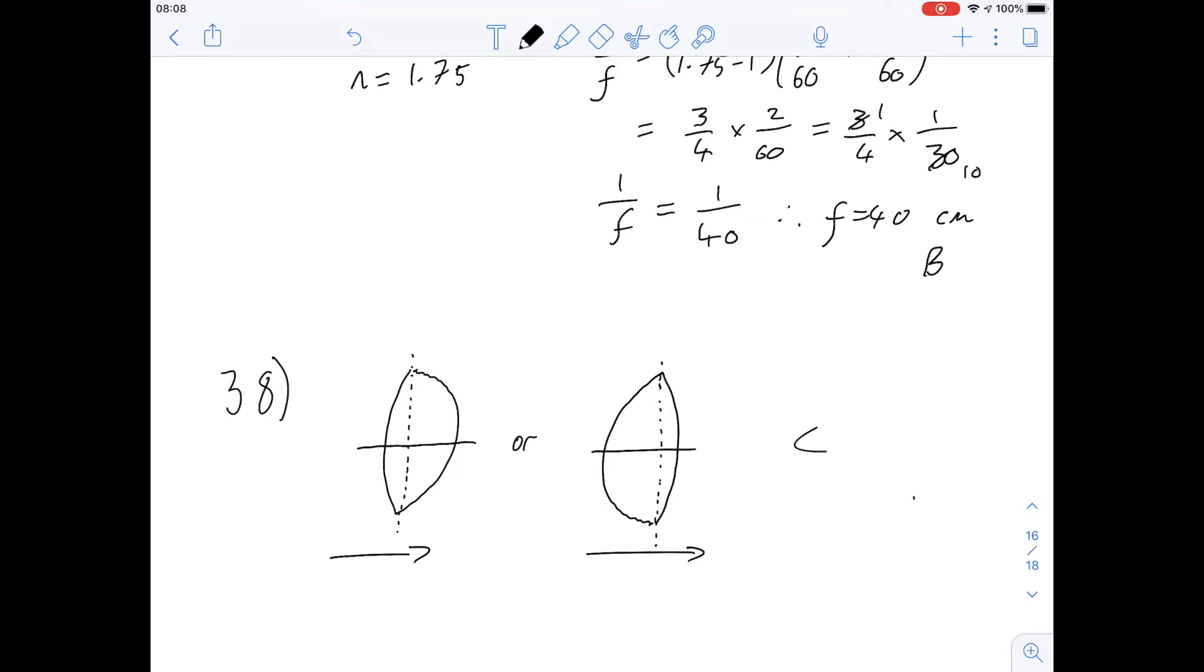Okay, so then question 39 says, consider a symmetrical bi-convex lens that has a focal length as long as the radius of the curvature. What is the refractive index? Okay, so that actually tells us quite a lot of information. So let's draw our equation again, so we know what we're dealing with. We've got n minus 1 upon 1 over r1 minus 1 over r2.